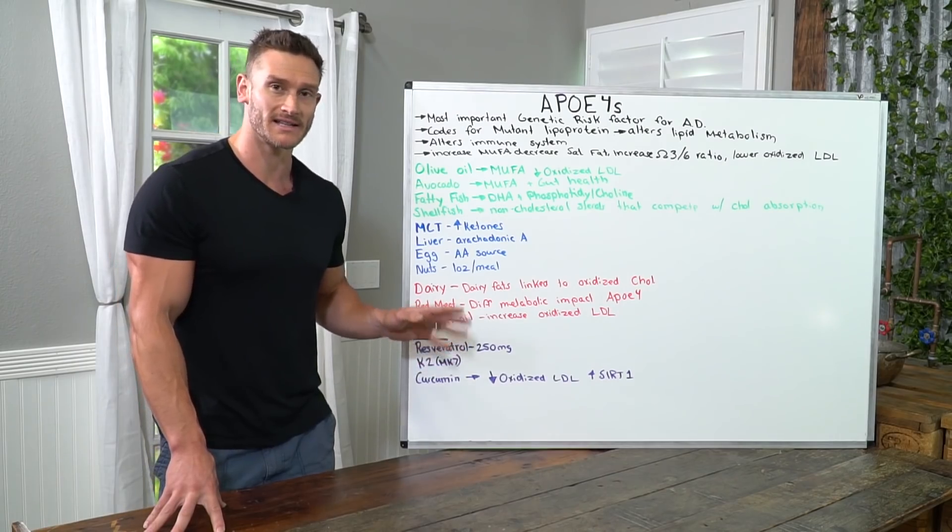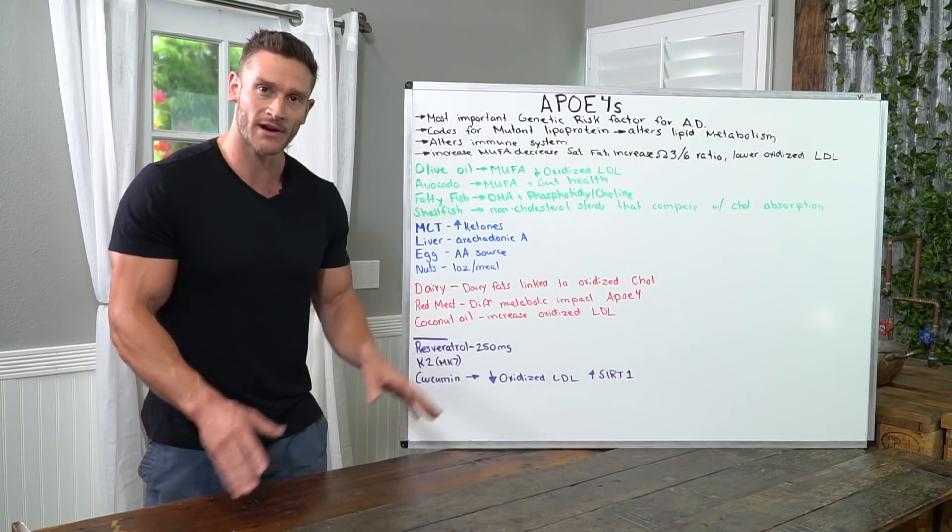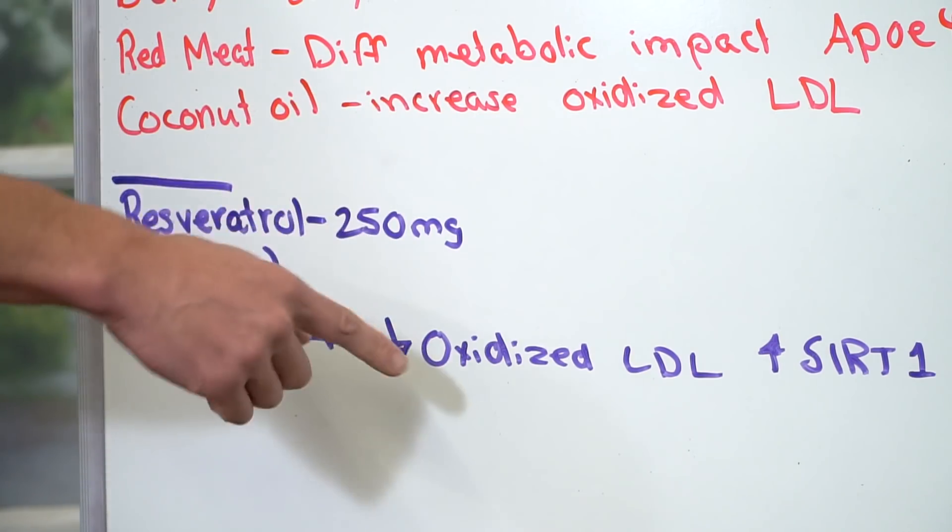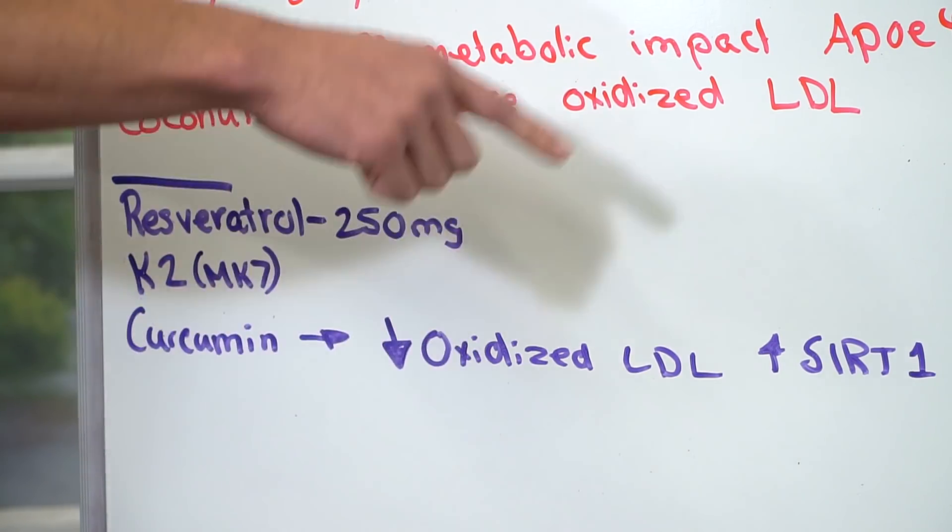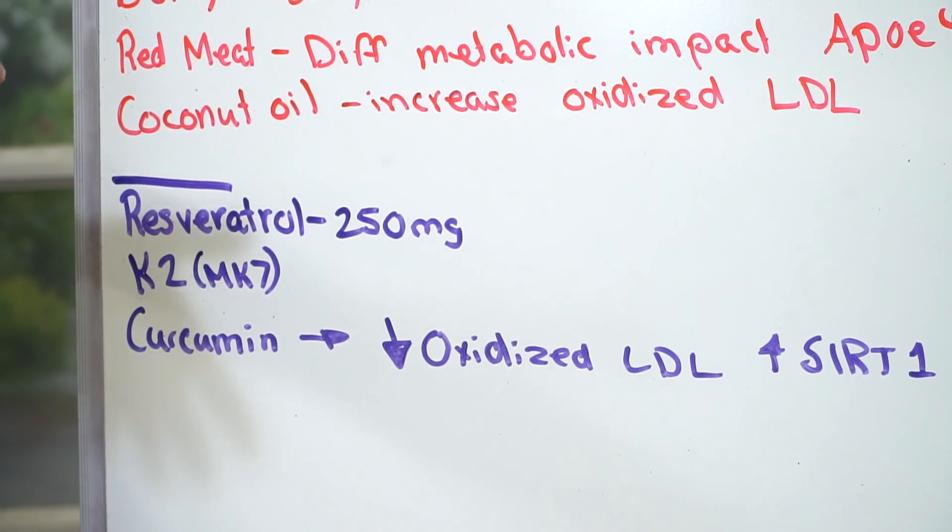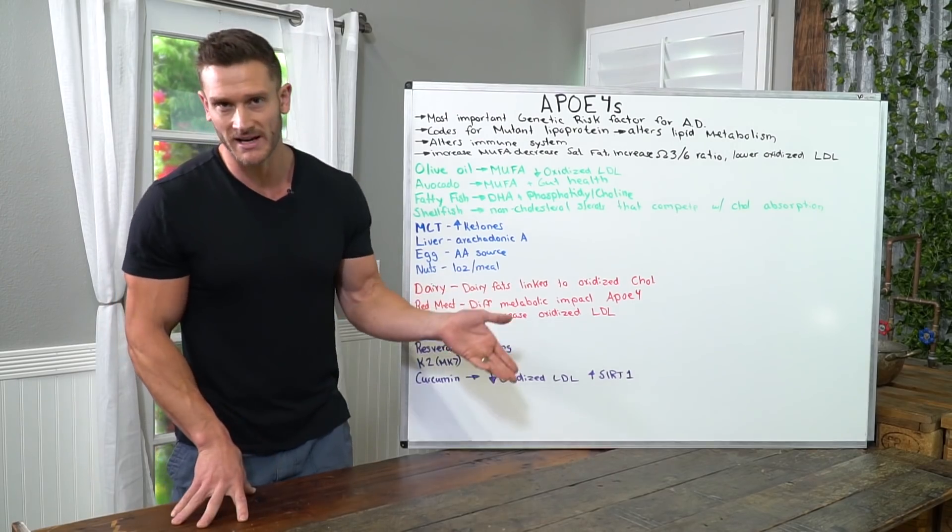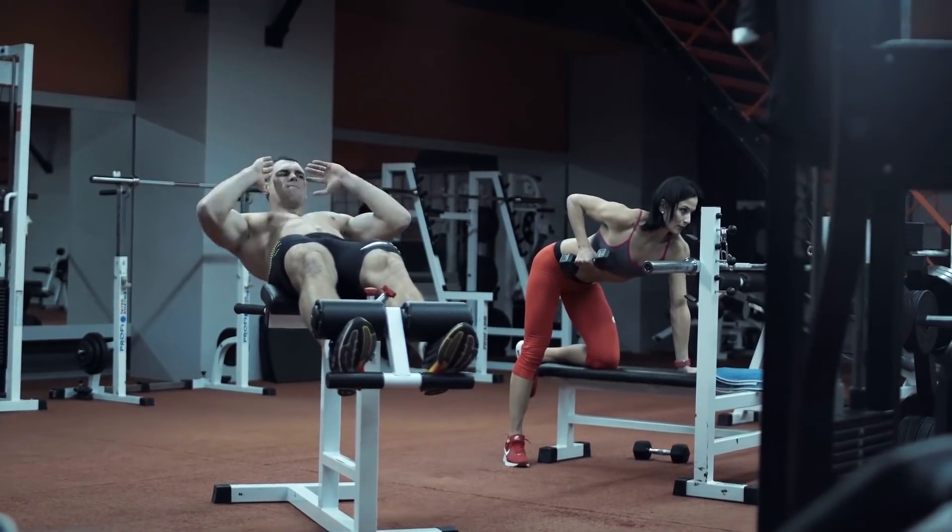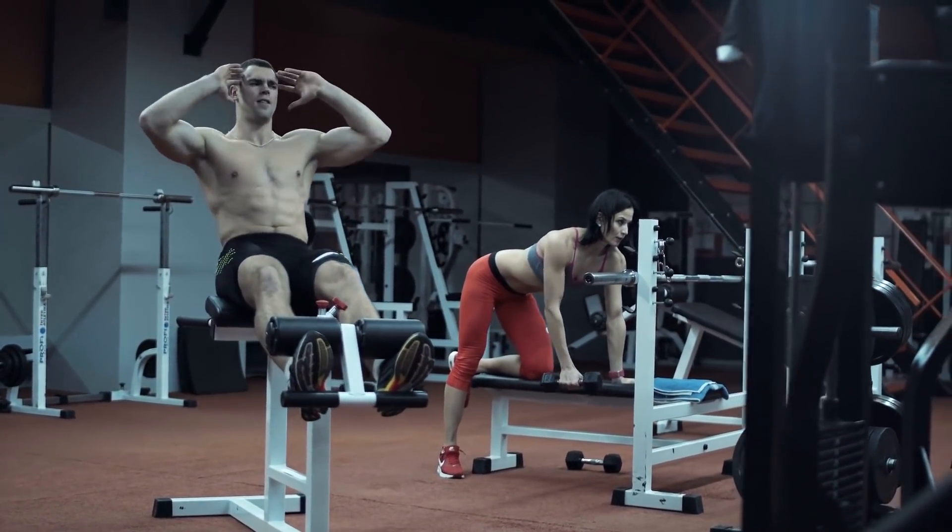And finally curcumin. WNT signaling, activating WNT signaling and other kinds of genetic processes ultimately help us reduce oxidized LDL and increase what are called SIRT2 and SIRT1, SIRT3, mainly SIRT1. So it makes it so that we have an anti-aging process, which is going to be good for anyone with APOE4.